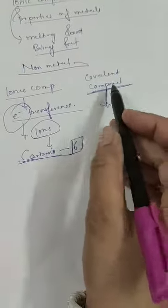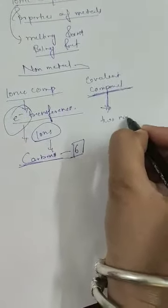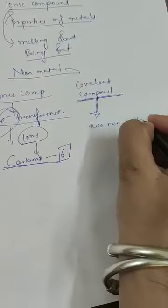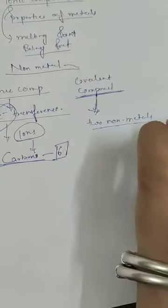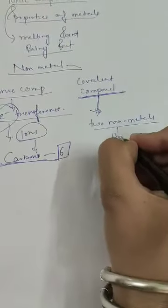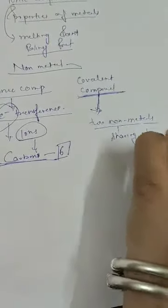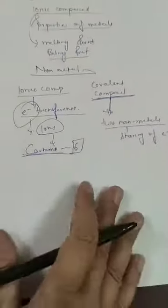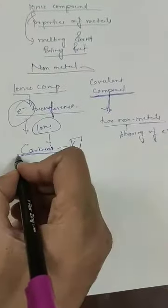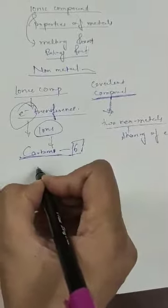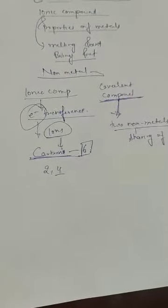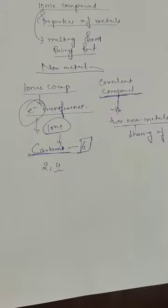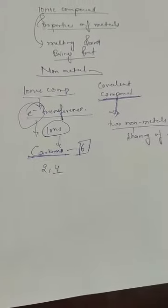A covalent compound is formed between two non-metals by the sharing of electrons. Carbon's atomic number is 6 and its electronic configuration is 2, 4. Now, every atom becomes stable by gaining or losing electrons to attain a noble gas configuration.